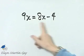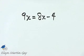Let's solve this equation for the variable x. We want to find the value of x that makes this a true statement. So we want x on one side and a number, some number on the other side.